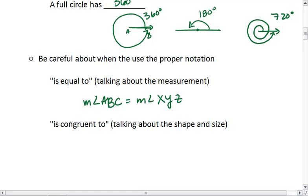We can say that they're congruent by saying that angle ABC is congruent to angle XYZ. So we see measurement versus shape and size.